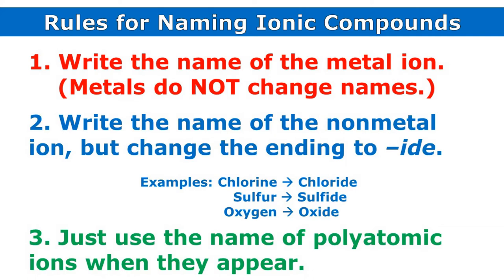For example, chlorine will become chloride, sulfur will become sulfide, oxygen will become oxide. And if we realize that there's a polyatomic ion in the formula, we'll just use the name of the polyatomic ion when it appears.